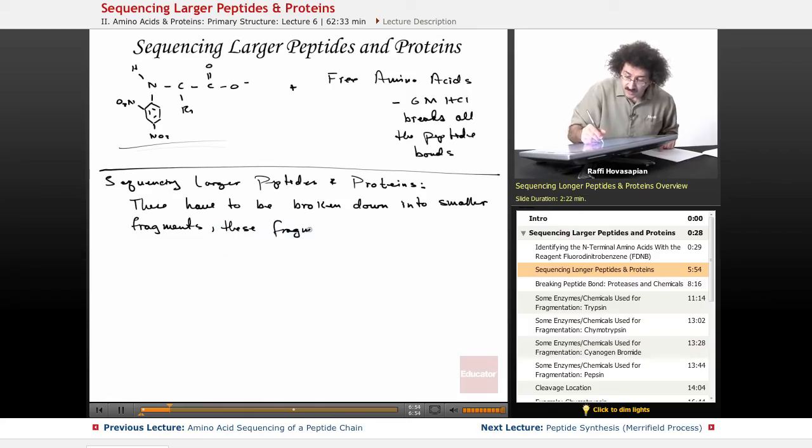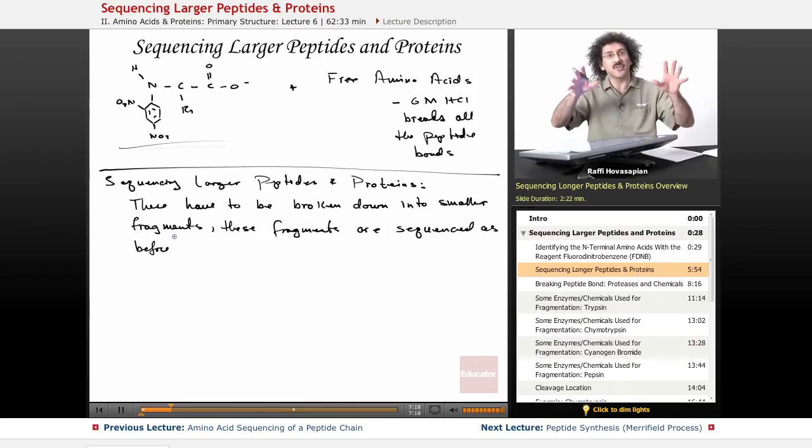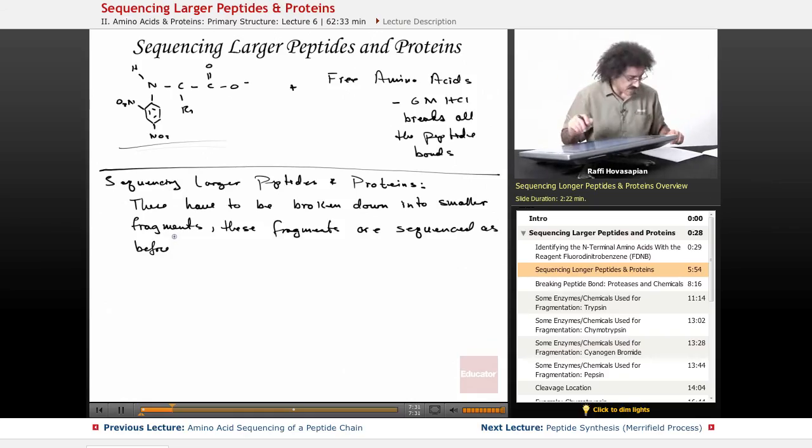These fragments are sequenced just like before with the Edman degradation. So if you have a protein or peptide and you chop it up into four fragments, you sequence those four and then you have to decide which fragment is in front of which fragment. We have some techniques to deal with ordering those. You're just making your job - you're doing the same thing, except you're doing it for more fragments.